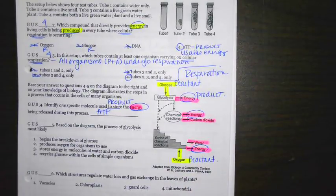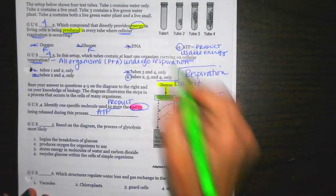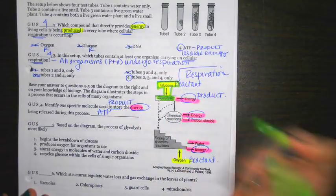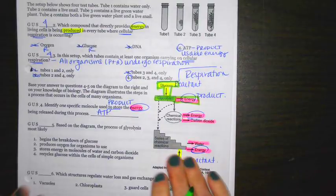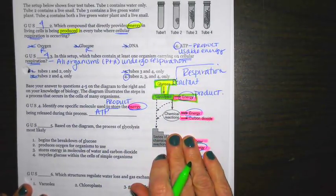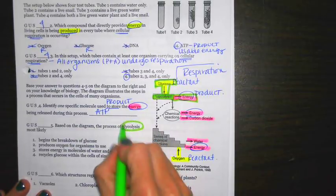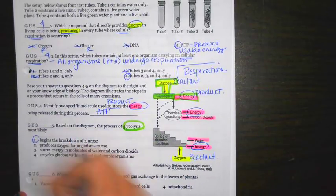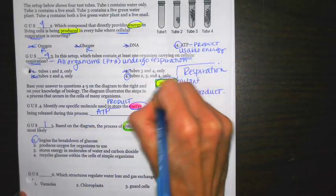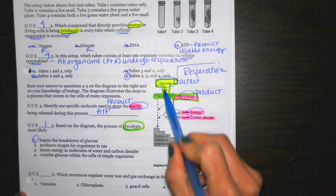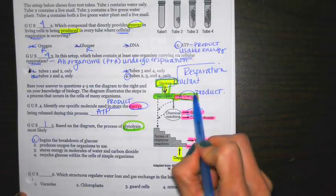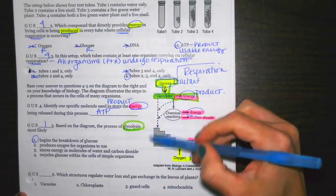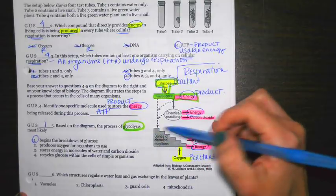Based on the diagram, the process of glycolysis most likely. So right here, I have glycolysis. What's going in? And then what's coming out? Again, this is really, you don't need to know background information. You just need to be able to analyze this diagram here. The right answer for this is going to be one. Begins the breakdown of glucose. Look what's going in. Glucose is going in. You can't tell necessarily that it's being broken down. But at this point, it's being split apart. And you produce ATP. And then whatever isn't produced into ATP goes into the next section of cellular respiration.